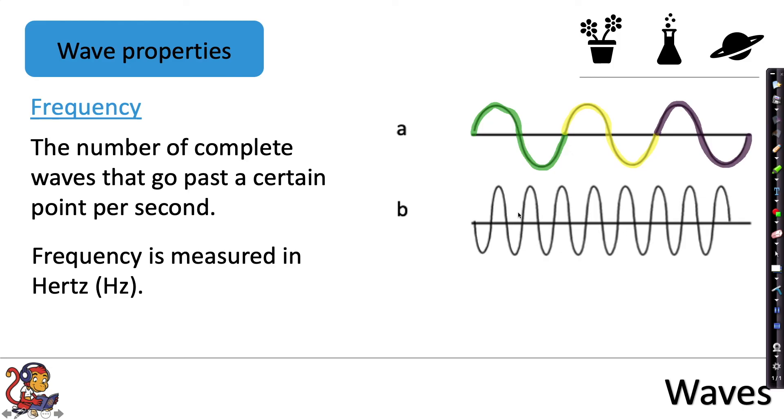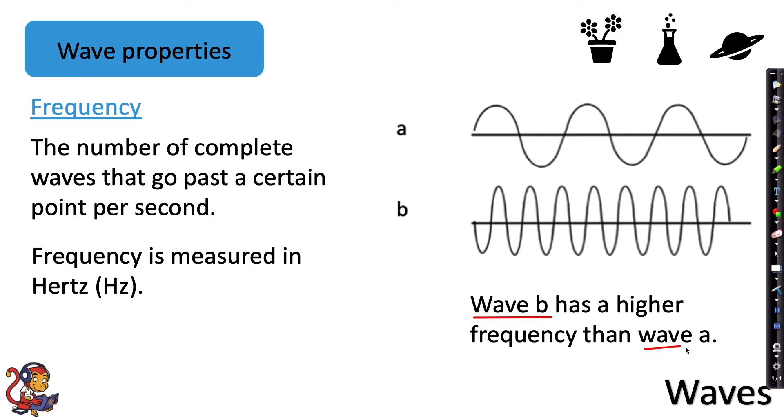Frequency is measured in Hertz. So you can see here that wave B has a higher frequency than wave A. Because if we were to measure the number of waves that were going past this point every second, wave B would have many more waves passing that point compared to wave A, so it would have a higher frequency measured in Hertz.